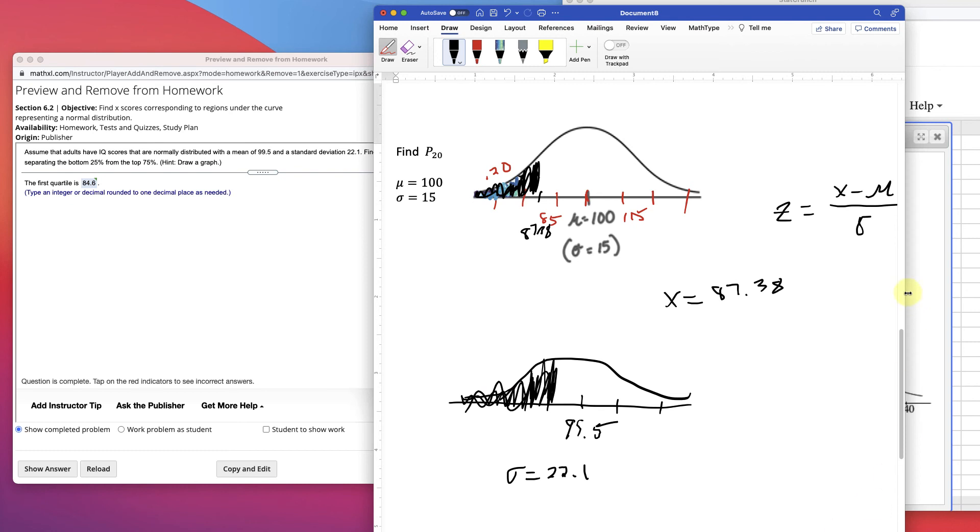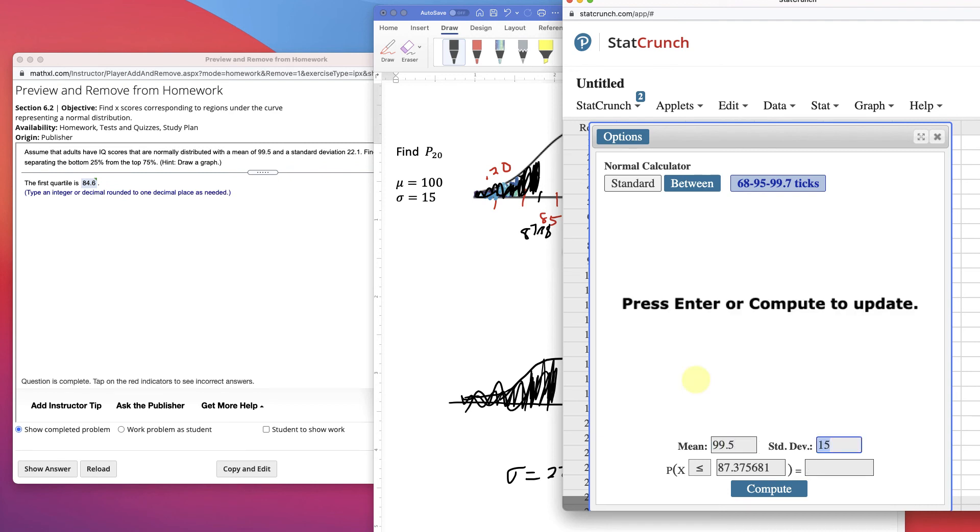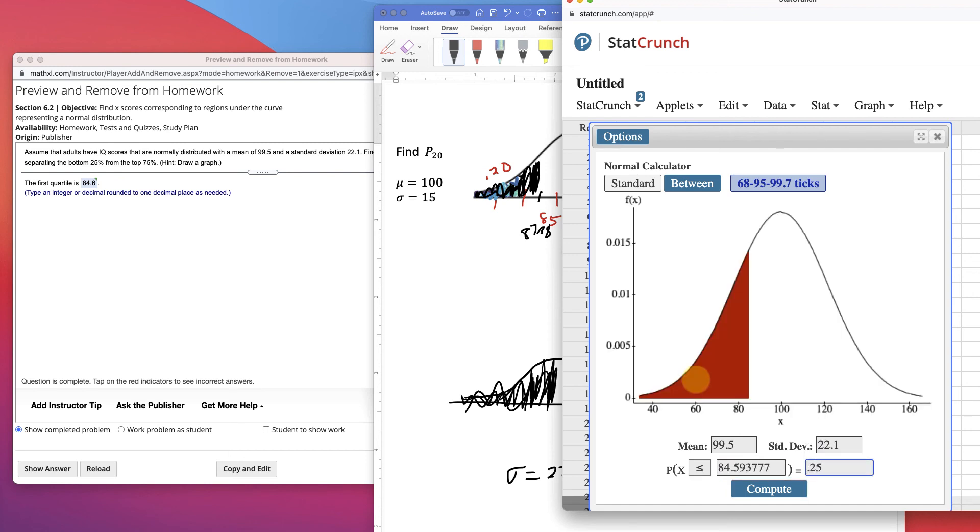So I go into StatCrunch, go into my calculator, modify my mean to 99.5. Modify my standard deviation to 22.1. Bottom 25%, we put over here, we want .25 to be to the left. 84.59 or 84.6 is the answer.